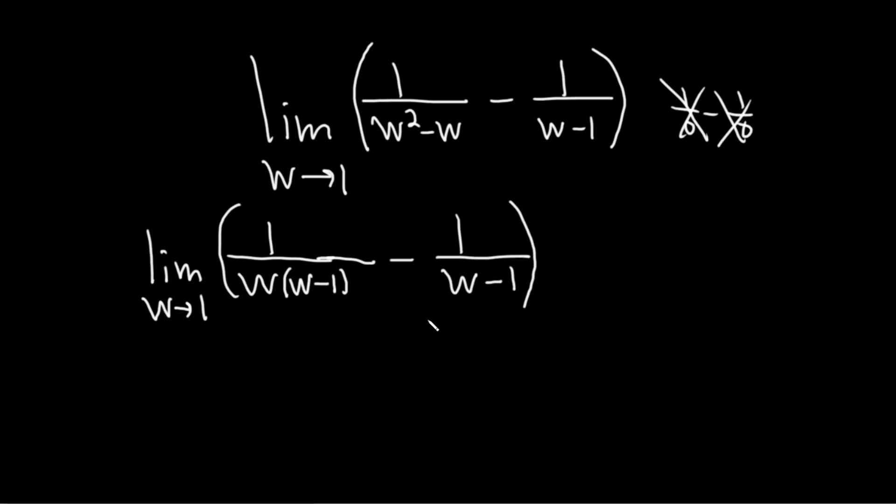And so now we can perform the subtraction, but we first need to find a common denominator. So it looks like we're missing a w here, so what I'm going to do is multiply by w over w. We're basically multiplying by 1 in a clever way so that we've created a common denominator.